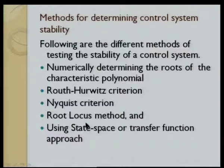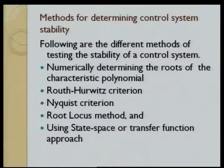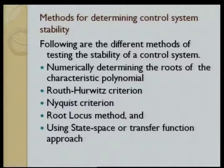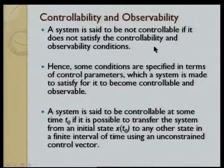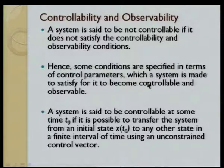Methods for determining stability include: numerically finding roots of the characteristic polynomial (feasible for small systems), or using criteria such as the Routh-Hurwitz criterion, Nyquist criterion, root locus method, and transfer function or state space approaches for larger systems. Two other important parameters are controllability and observability. A system is not controllable if it does not satisfy these two conditions. A system is controllable if it is possible to transfer from an initial state to any other state in a finite time interval.